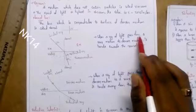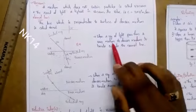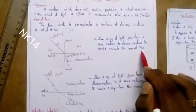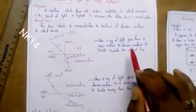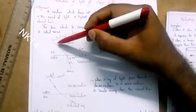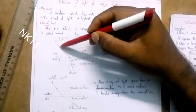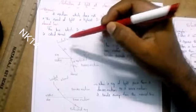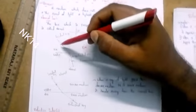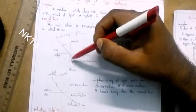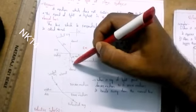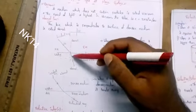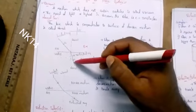When a ray of light goes from a rarer medium to a denser medium, it bends towards the normal line. The ray traveling from the rarer medium is called the incident ray, and the emergent refracted ray will be close to the normal line.